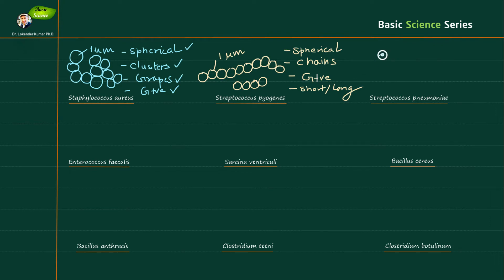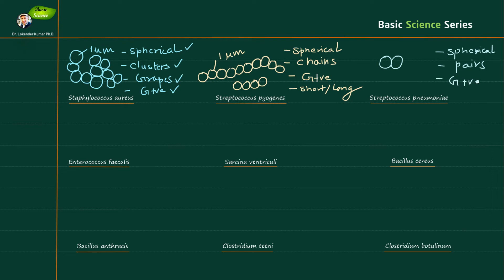Now let's discuss Streptococcus pneumoniae. As the name indicates, it's spherical — I have drawn the spherical structure here. However, it is present in pairs rather than clusters or chains. So: spherical structure, present in pairs, and Gram-positive. The diameter of each individual cell is also around one micrometer.